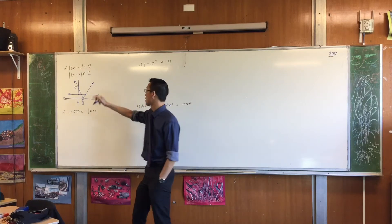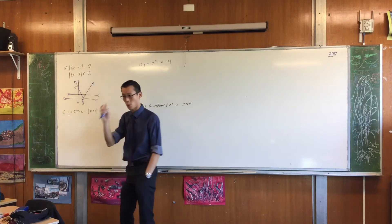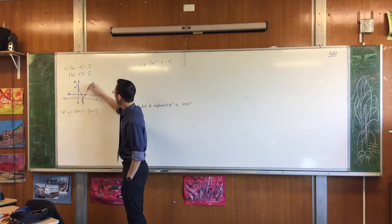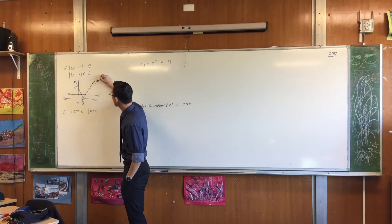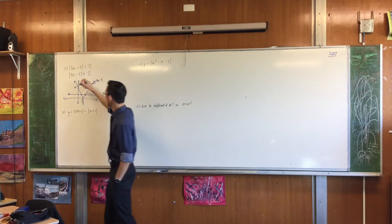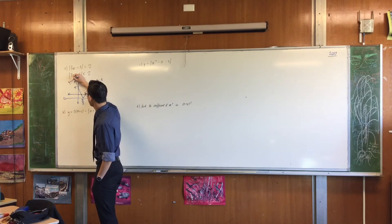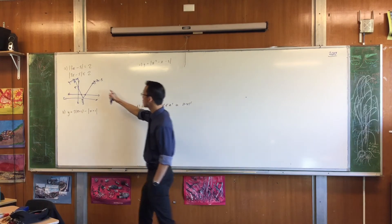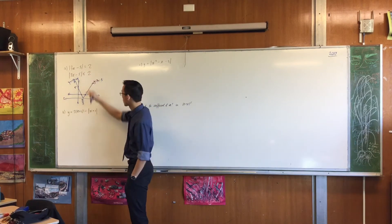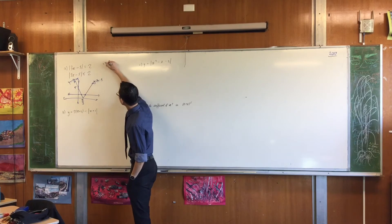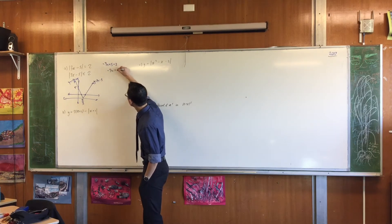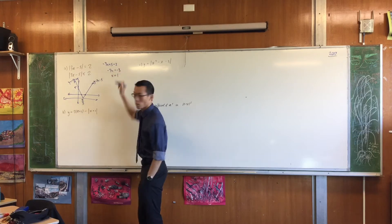This is too icky to solve visually with precision anyway. So I'm going to think about this branch, which is y equals 3x minus 5, and then think about the other branch, which is y equals minus 3x plus 5 — it's just everything with negatives. So: minus 3x plus 5 equals 2, minus 3x equals minus 3, x equals 1.